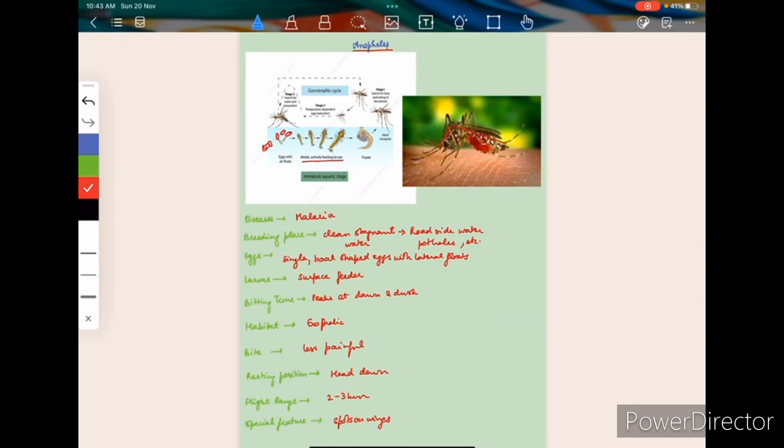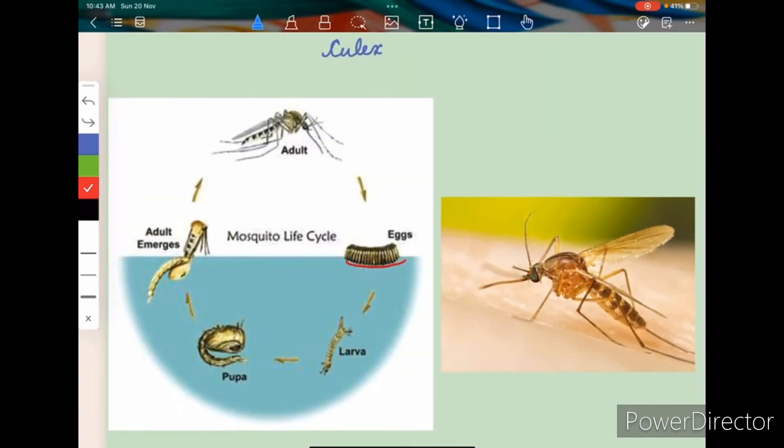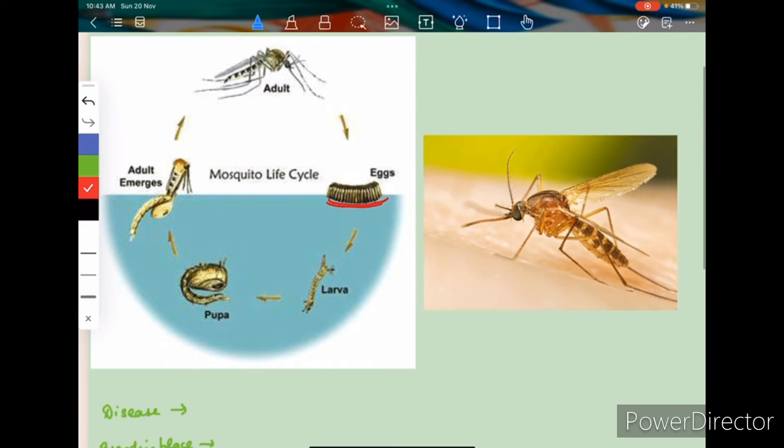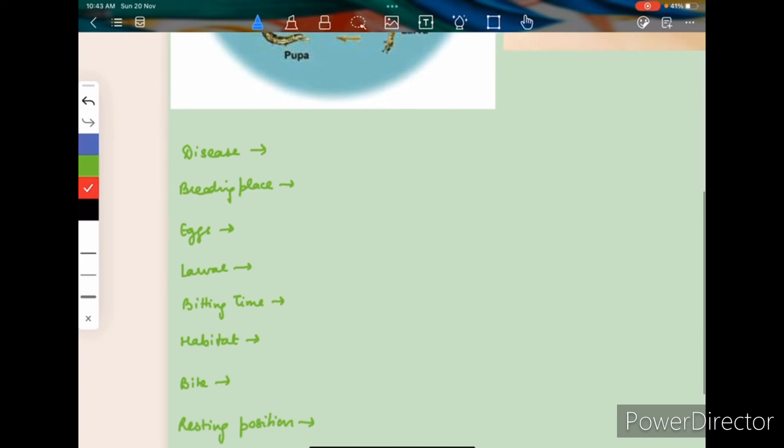So this is the Anopheles mosquito. Coming on to the Culex mosquito, here you can see the eggs are placed in sheets and collections. So the disease caused by Culex is Japanese encephalitis and filariasis.